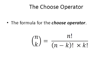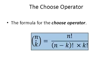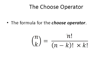The formula for the choose operator is as follows. We verbalize this term as 'n choose k', and it is computed as n factorial divided by the quantity n minus k factorial times k factorial.